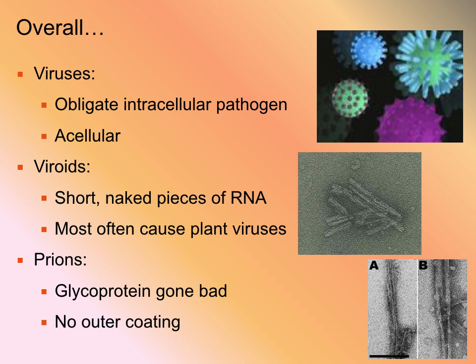Viroids are small little naked pieces of RNA. They cause disease in plants. We don't really know of any viroids that cause disease in humans. There are a couple that cause disease in insects, so they are capable of entering into animal cells, not just plant cells, but for the most part they are plant viruses.